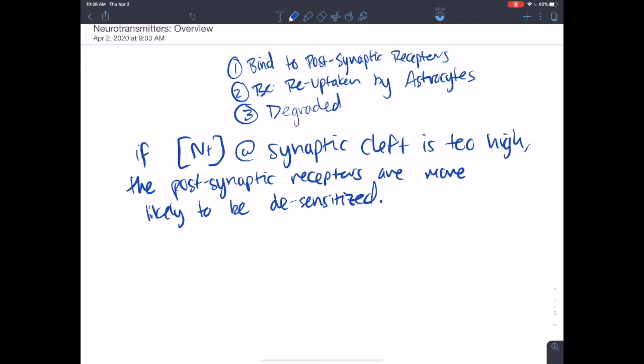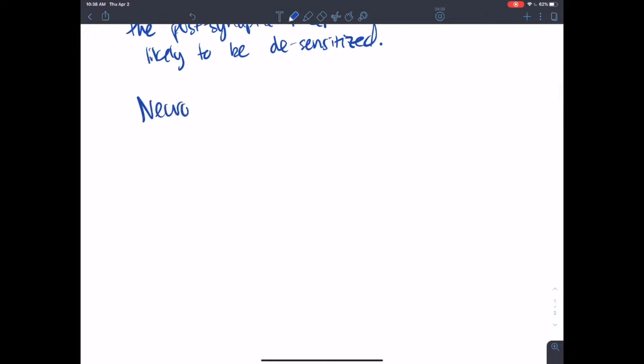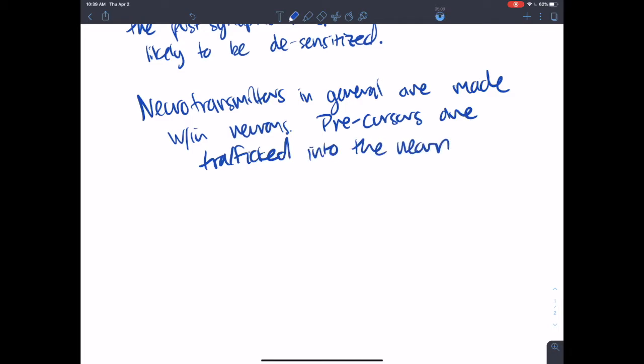So neurotransmitters in general are made within neurons. Precursors to these neurotransmitters are trafficked into the neurons and it's often within the synaptic terminal itself.